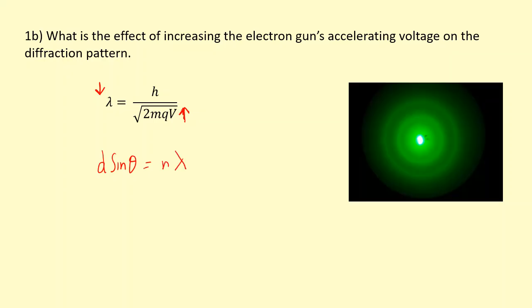So if the wavelength decreases, and we're interested in the first order here, and of course the distance between the atoms is fixed, so we can just ignore these two. So sin theta will also decrease. In other words, theta also decreases.